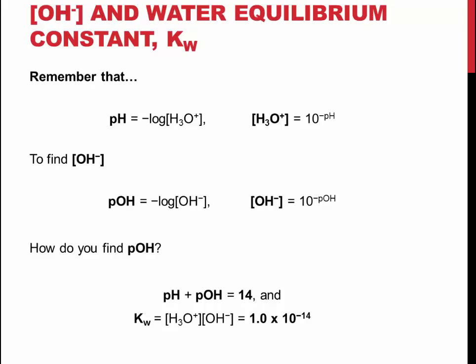It is also important to know how to calculate the pH and pOH. As we have seen before, the pH is the negative log of the concentration of hydronium. Similarly, the pOH is the negative log of the concentration of hydroxide ions, and this gives you the pOH.